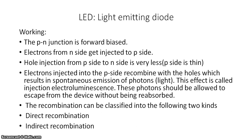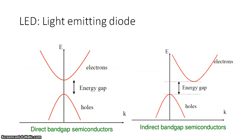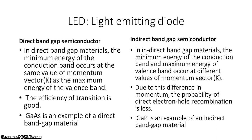Recombination can be classified into two types: direct recombination and indirect recombination. In direct recombination, the maximum of the valence band and the minimum of the conduction band occur at the same value of k, where k is the momentum vector. In an indirect band gap semiconductor, the maximum of the valence band and minimum of the conduction band occur at different values of k. The efficiency of transition in a direct band gap semiconductor is better than that of an indirect band gap semiconductor.